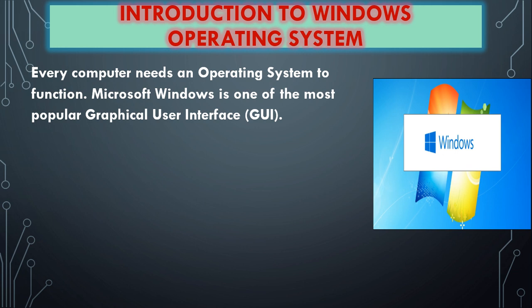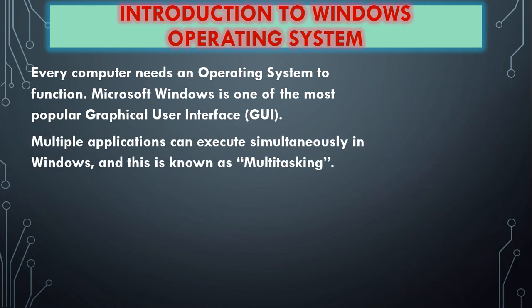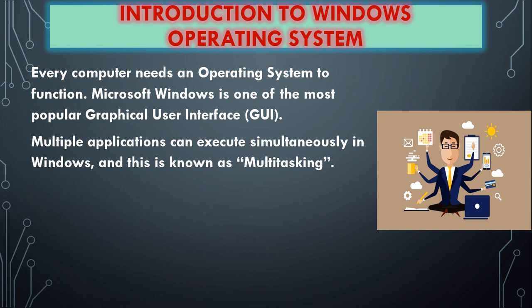Windows is the most commonly used operating system, because it has attracted users based on the GUI — that is, the graphical user interface. So everything is colorful and user friendly. Multiple applications can execute simultaneously in Windows, and this is known as multitasking. At the same time we can type and edit, and at the same time we can print out. So multiple tasks can be done simultaneously, and Windows is supporting us. That is called multitasking.